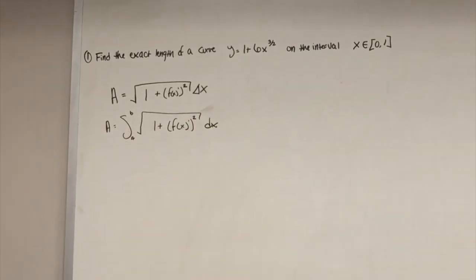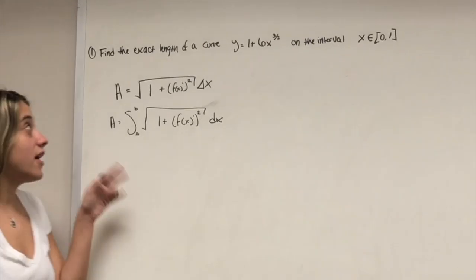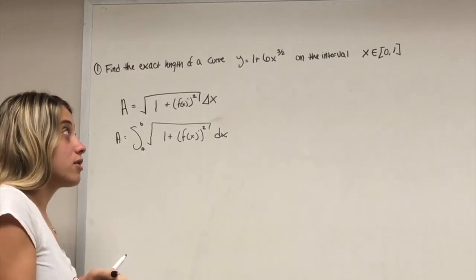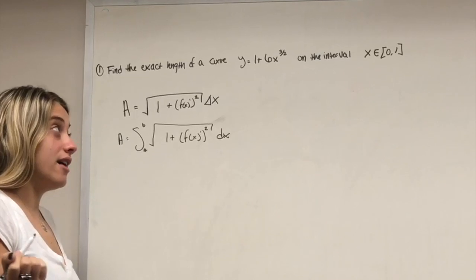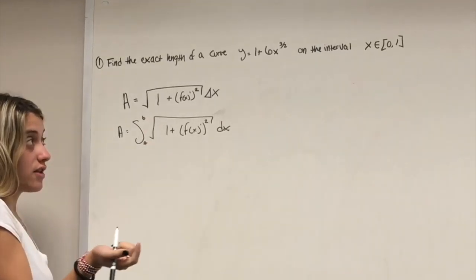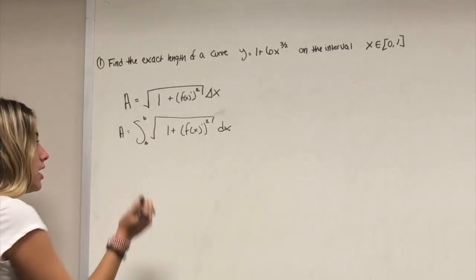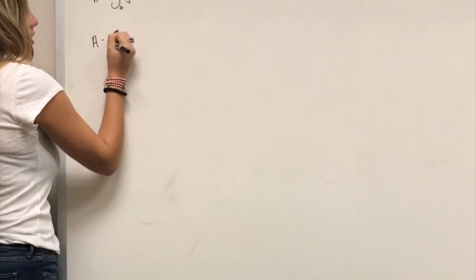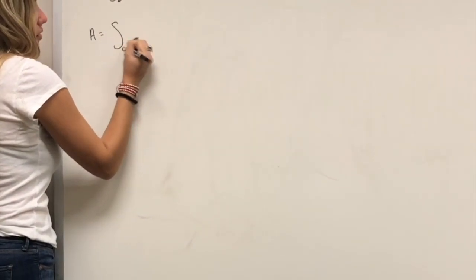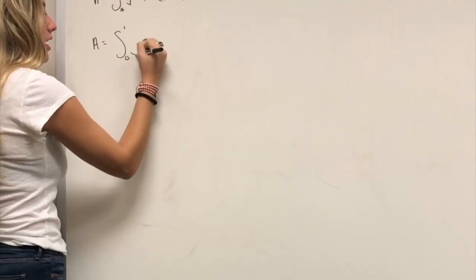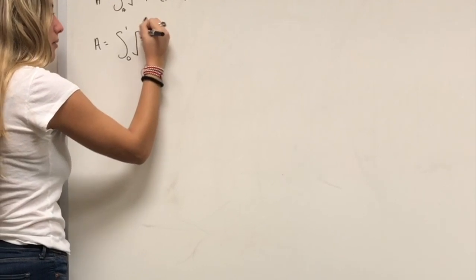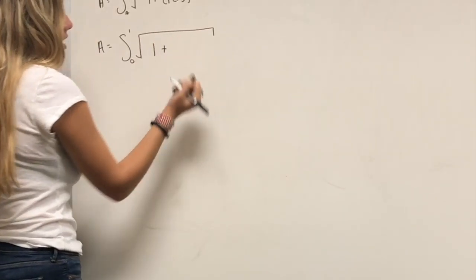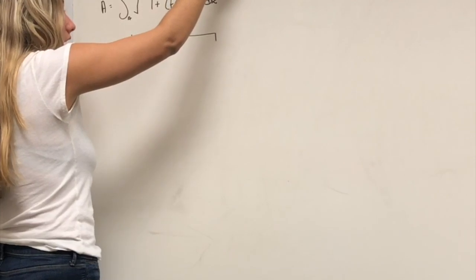On the first question, find the exact length of the curve y = 1 + 6x^(3/2) on the interval from 0 to 1. So you plug in 0 for a and 1 for b, and then take the square root of 1 plus the derivative of y.